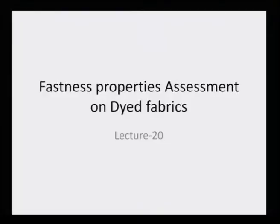How do we ascertain, how do we categorize that this dye is good for cotton and this dye is better for silk or wool and so on? It is on the basis of the assessment of the fastness property. Let us try to understand the fastness property assessment on dyed fabrics and look at the various fastness property machines.